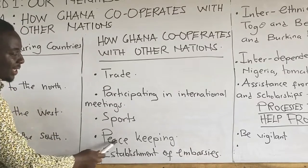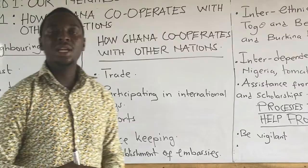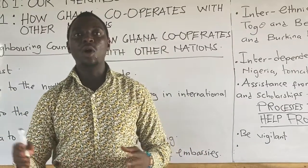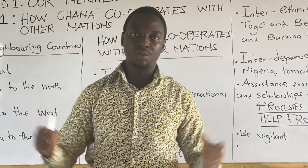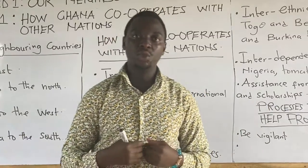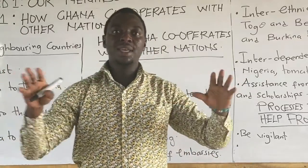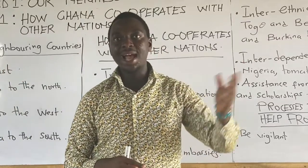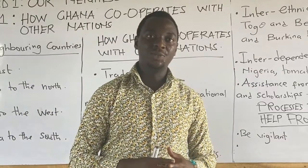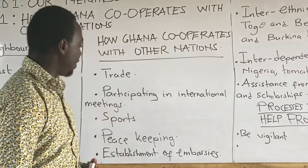Our next point is peacekeeping. Other countries experience wars — civil wars and other ethnic wars. Through ECOWAS, Ghana represents itself there with soldiers to help keep peace in other countries like Liberia, Sierra Leone, and other countries that have ever experienced war. Through this, Ghana cooperates with other nations.